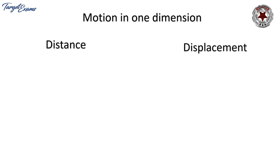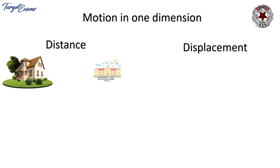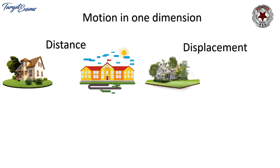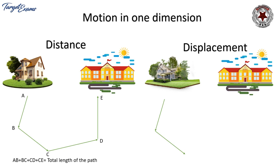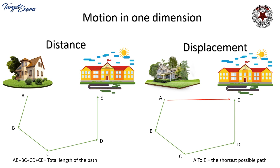We take school and house as an example for distance and displacement. From point A to B, B to C, C to D, D to E — the total length of the path is AB + BC + CD + CE. This is called the distance traveled. Distance has no direction, so it is a scalar quantity.